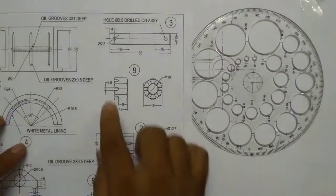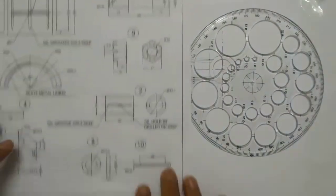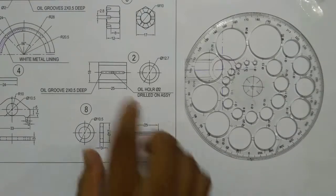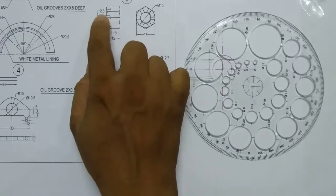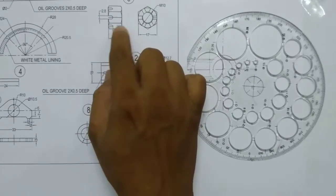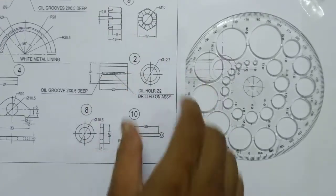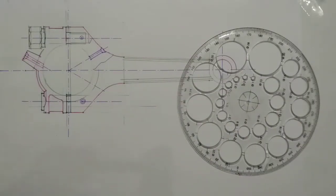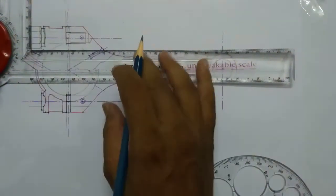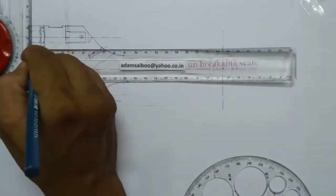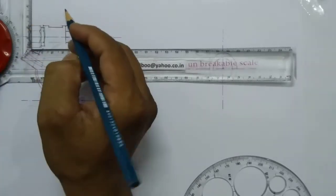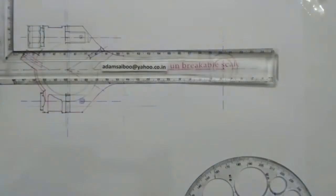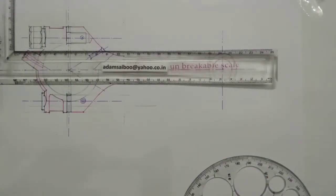This nut has the facility to insert the split pin, so it has a slot of gap 2.8mm. The bottom portion is 8mm from this edge, so I am marking 8mm from here. The gap is 2.8, approximately 3.